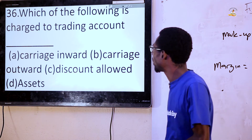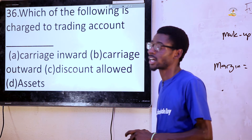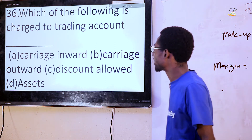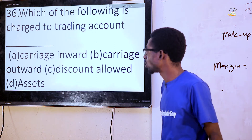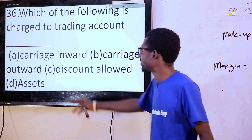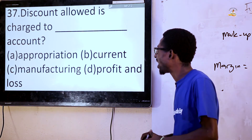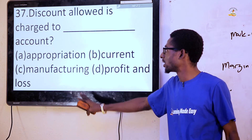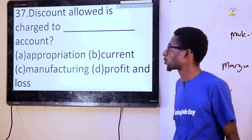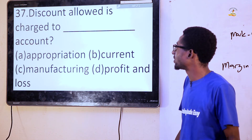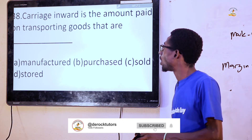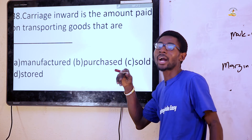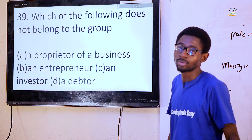Question 36: Which of the following is charged to the trading account? Options include carriage inwards and carriage outwards. Question 38: Carriage inwards is the amount paid on goods that are purchased. Carriage outwards is on goods that are sold. The answer is option B.